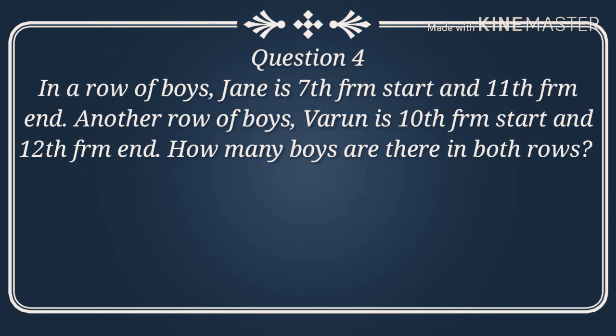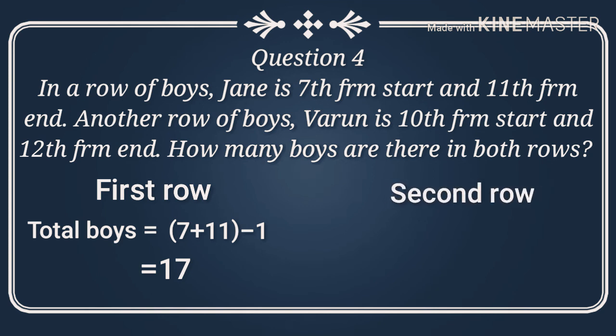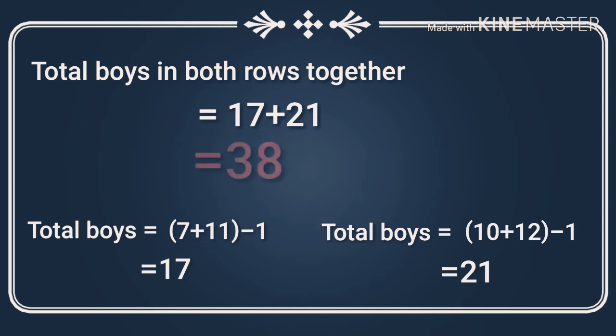Question number four: in a row, James is 7th from the start and 11th from the end. How many boys are there in both rows? In the first row: 7 plus 11 minus 1 equals 17. In the second row: 10 plus 12 minus 1 equals 21. The answer is 17 plus 21, which equals 38.